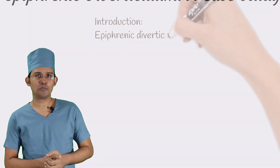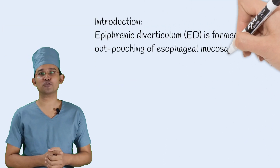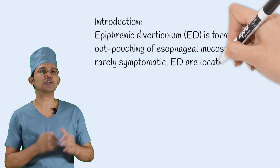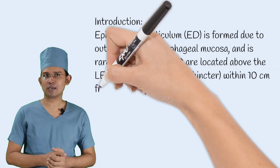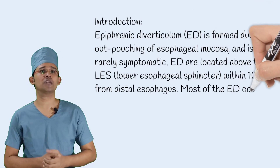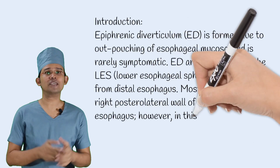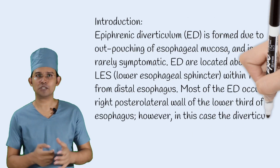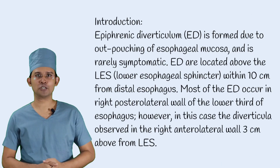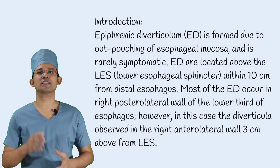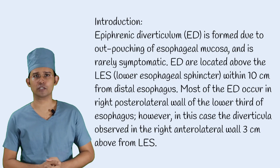Epiphrenic diverticulum is formed due to the outpouching of the esophageal mucosa and it is rarely symptomatic. Esophageal diverticulum are located above the LES — the lower esophageal sphincter — within 10 cm of the distal esophagus. Most epiphrenic diverticula occur in the right posterolateral wall of the lower third of the esophagus.